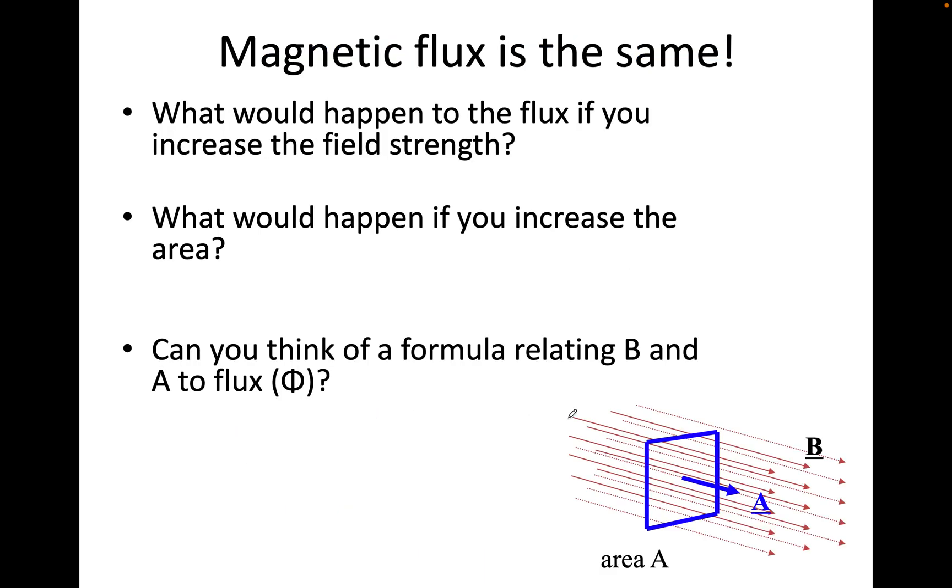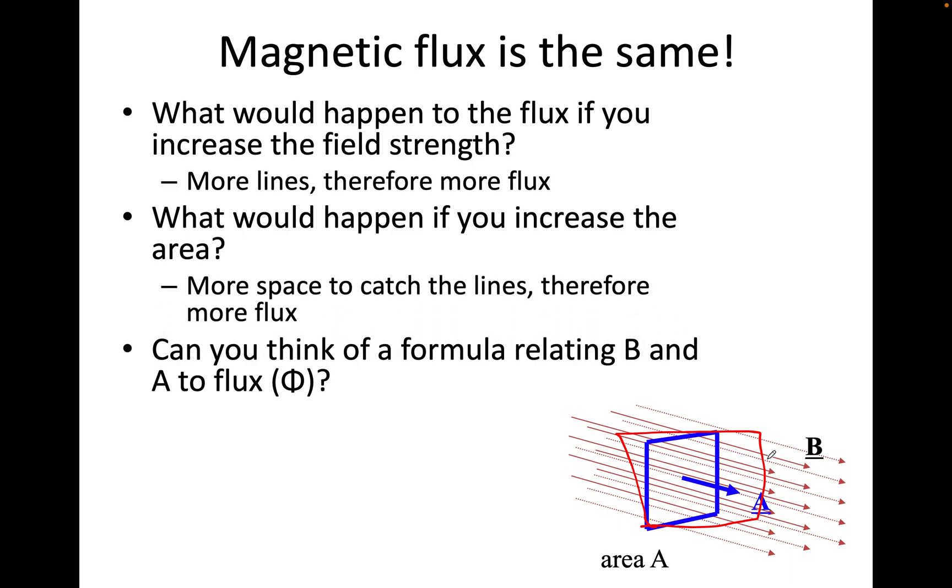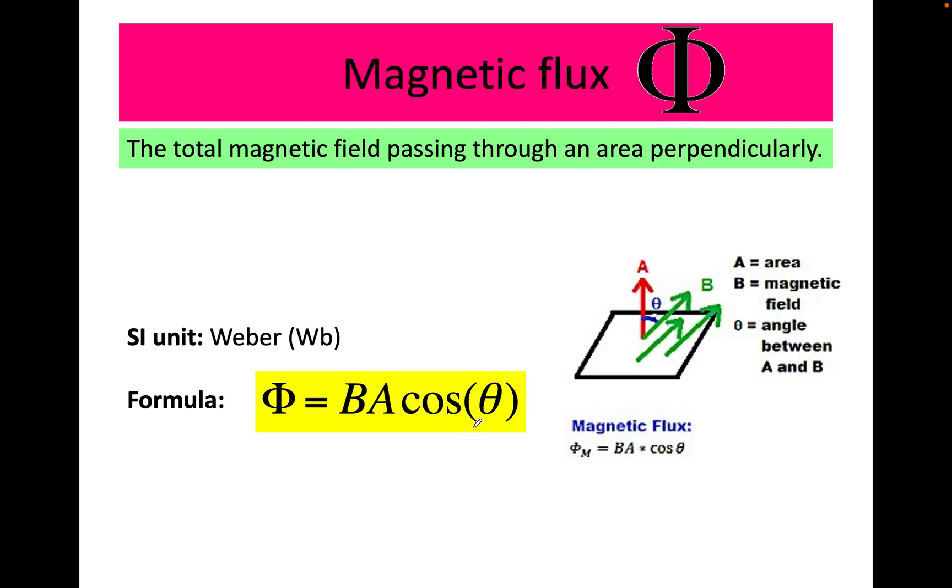This will be exactly the same. So if I increase the flux, or if I increase the field strength, make more lines, I will have a bigger flux. If I make my area bigger, I can catch more lines, I will have a bigger flux. So if you think of a formula, I can simply multiply them together. Flux equals BA now, because it's a magnetic field, which is B. Electric field is E, magnetic field is B. We will do the dot product, BA cos theta.